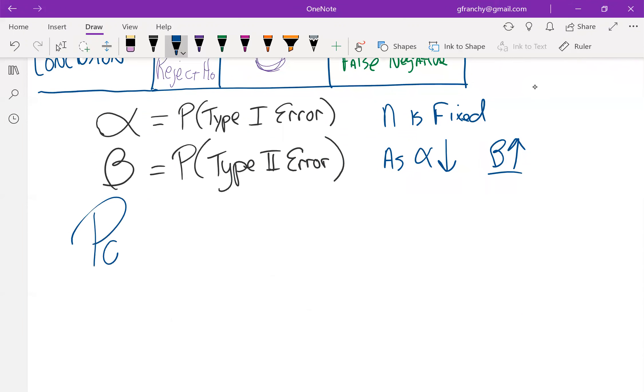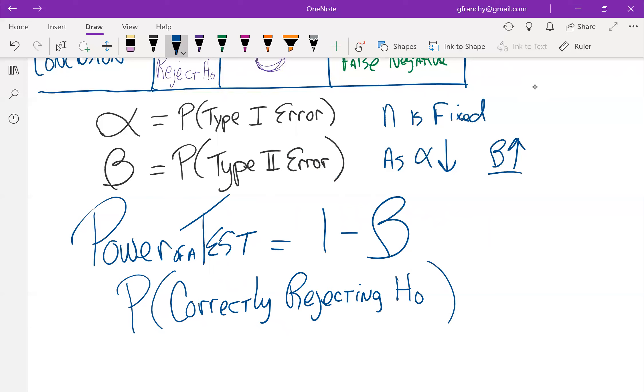One of the other things that they talk about associated with this is the power of the test. And the power of the test is the complement of beta. And it represents the probability of correctly rejecting the null hypothesis.